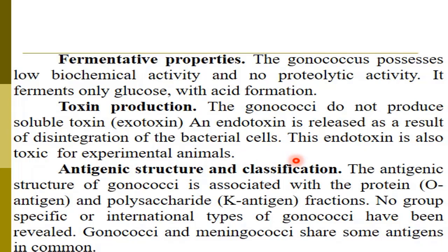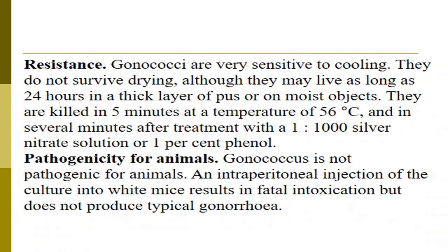In the antigenic structure and classification, the antigenic structure of gonococci is associated with protein antigens and polysaccharide K-antigen fractions. Note that polysaccharide is the term used here, while in Neisseria meningitidis we speak of oligosaccharide. No specific international types of gonococci have been clearly defined; both gonococci share similar antigenic structure.